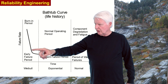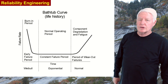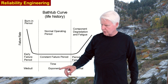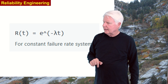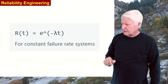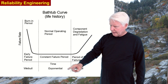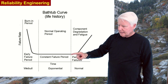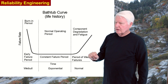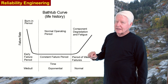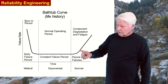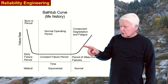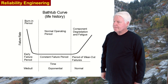The Weibull distribution is typically used for the wear-out portion of the curve, though it can model the entire curve — and the exam will test you on that. For the constant failure rate period, we more commonly use the exponential distribution because it's more user-friendly. The reliability function formula discussed earlier applies specifically to that constant failure rate period. For the wear-out period, we usually use the normal distribution to model it.